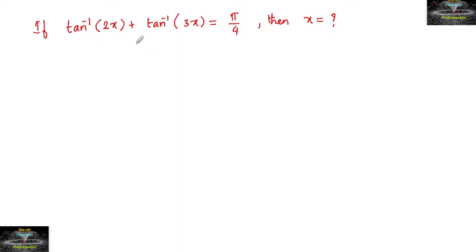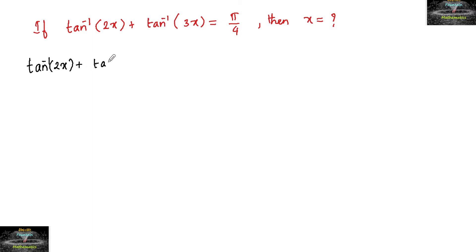If tan inverse of 2x plus tan inverse of 3x is equal to pi by 4, then x is equal to how much? So, tan inverse of 2x plus tan inverse of 3x is equal to pi by 4 is given.